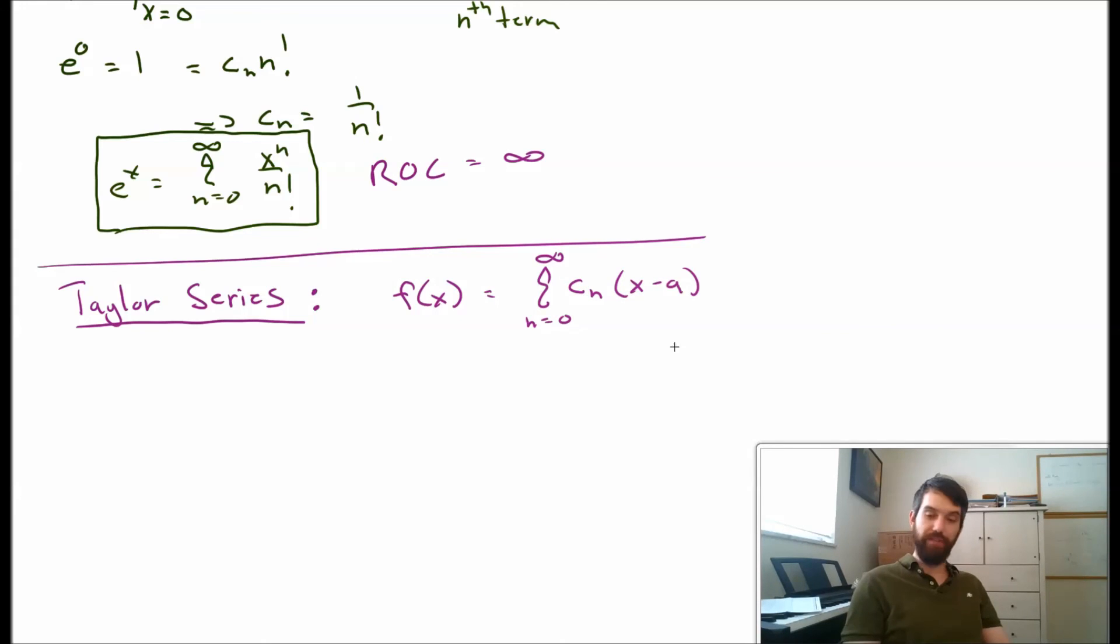and my function f(x) is represented by some power series cn, I'm going to put in the possibility of a center not at 0, so (x minus a)^n. And we have that this is valid for some radius of convergence, |x minus a| less than r.